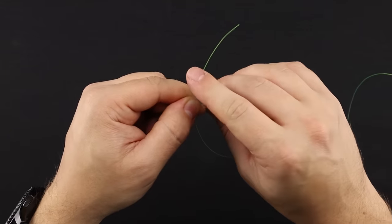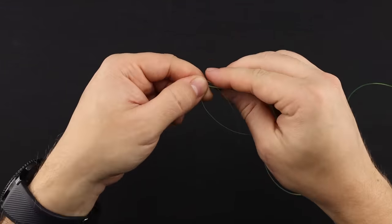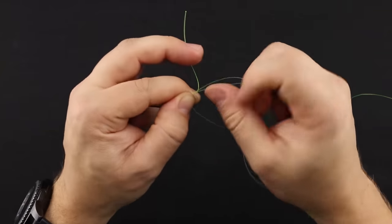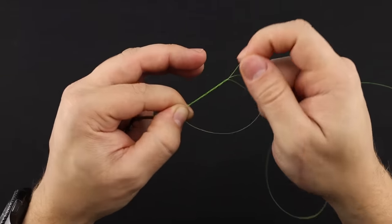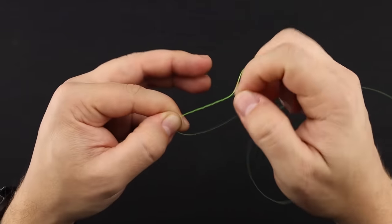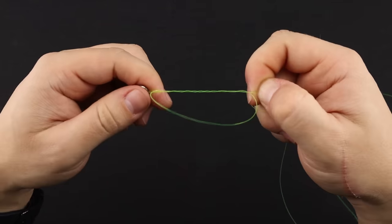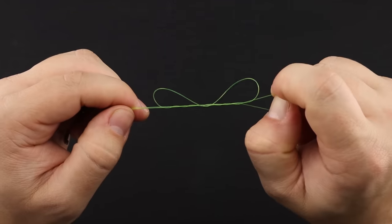Now the tag end is going to wrap around these two lines here and through your loop here. We'll do about six wraps total. So down around the two and up for one, two, three, four, five, and six.